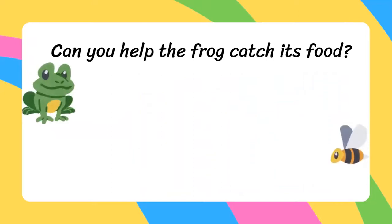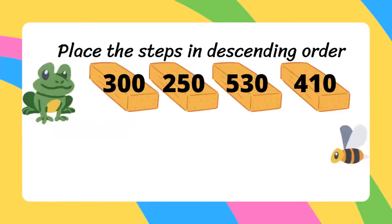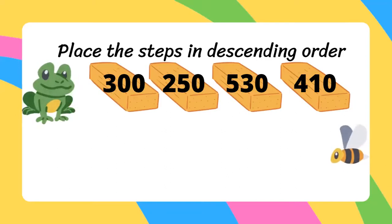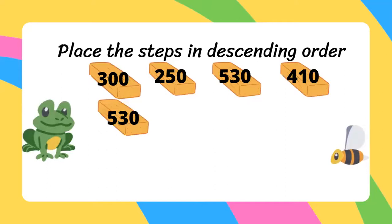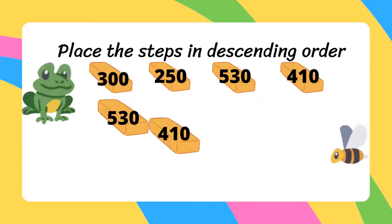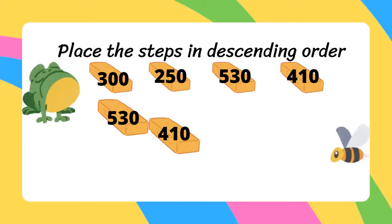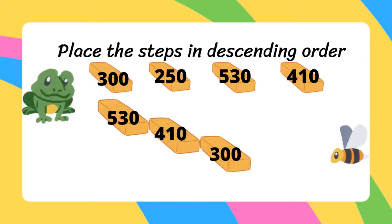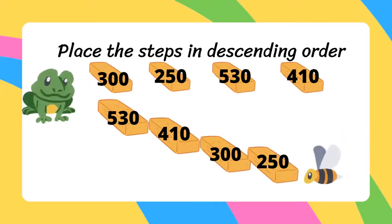Can you help the frog catch its food? Place the steps in descending order — that means from the biggest to the smallest number. The biggest number is 530. Out of the remaining three, the next biggest is 410. Of the two numbers left — 300 and 250 — the bigger is 300, and the smallest number remaining is 250. Good job!